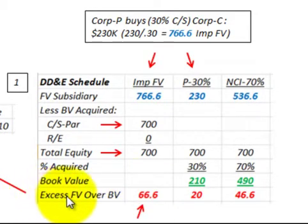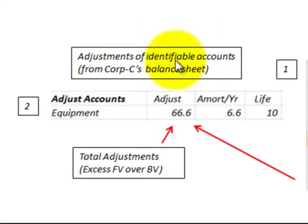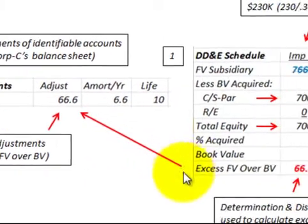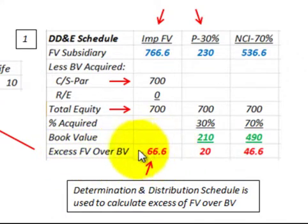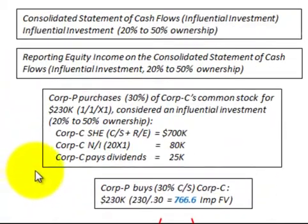For this example, the total excess of fair value over book value of $66,600 was assigned to an equipment adjustment — the equipment was adjusted up to its fair value. This represents the adjustment of identifiable accounts from corporation C's balance sheet. The equipment had a 10-year life, so our amortization amount is $6,600 per year — that's the $66,600 excess amortized over 10 years.